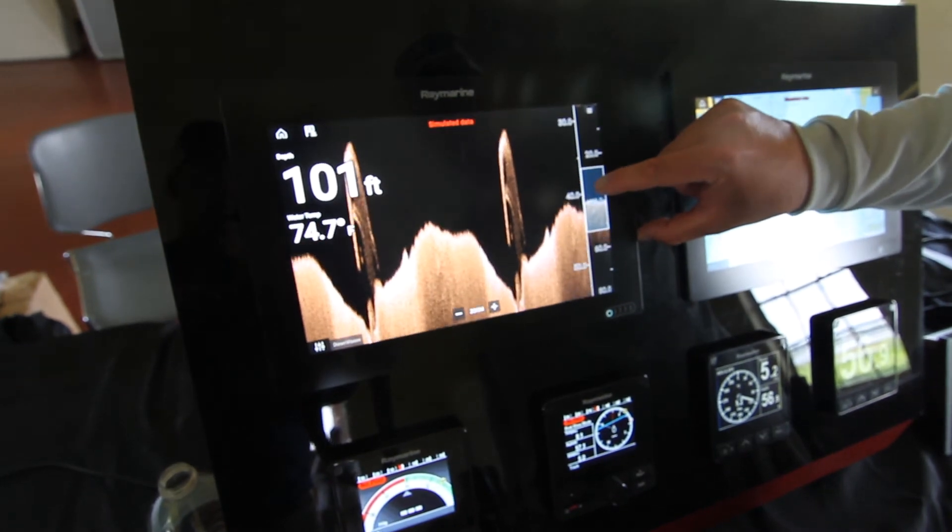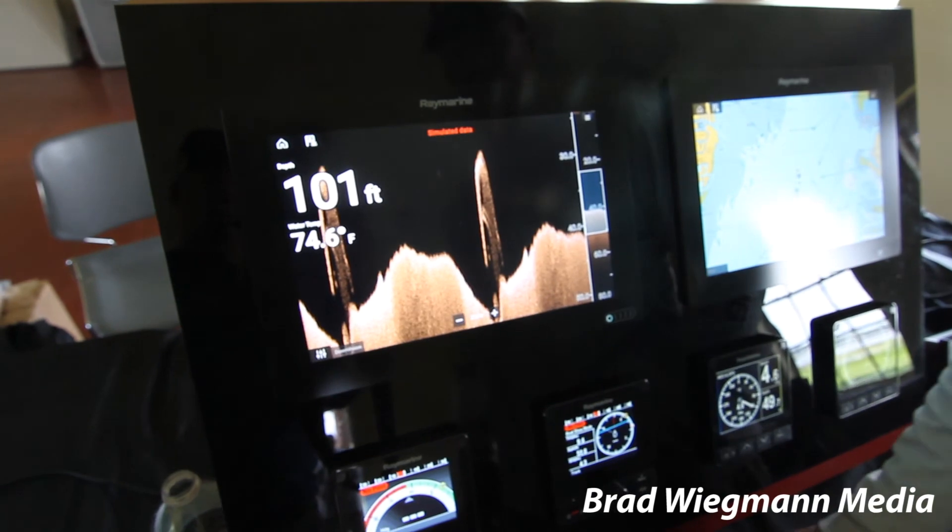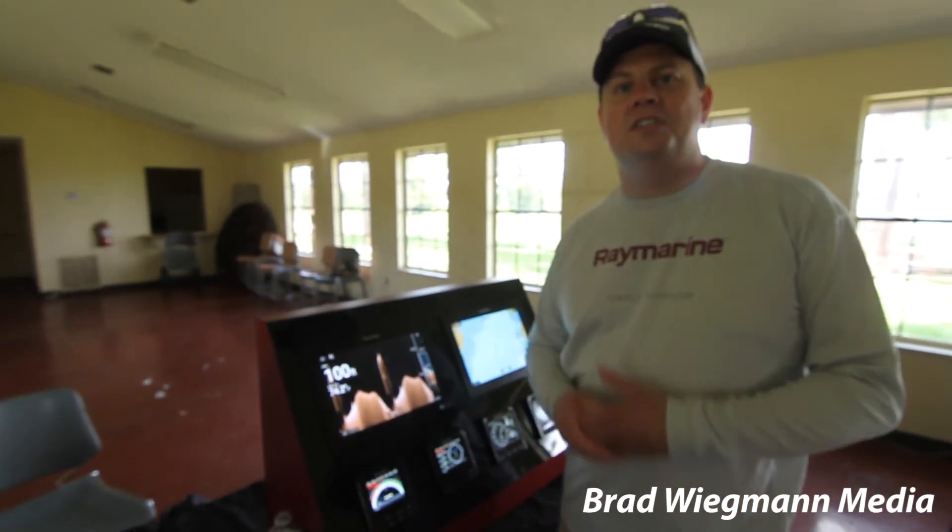Again with my little scroll bar over here, I can adjust and zoom up and down, see whatever portion of the water column I want to see. So it's real simple to use, gives you a lot of control, and allows you to see a lot of detail all at once.